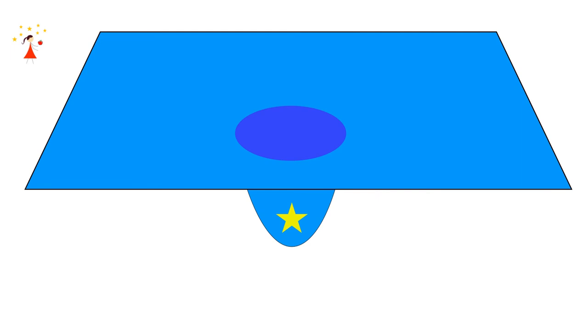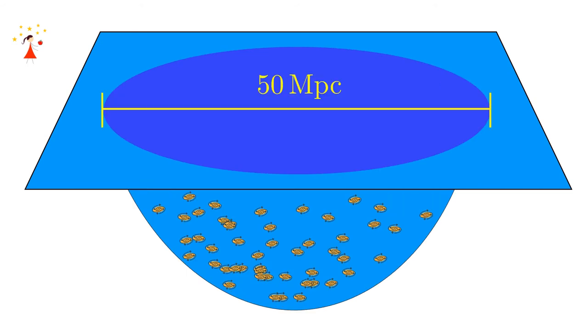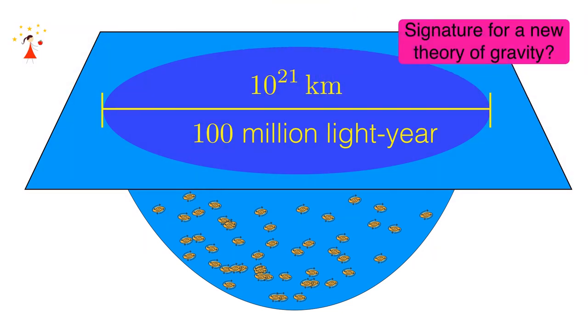Right. So that's why you need to test general relativity at large scales, then, to understand if it is correct. Yes, exactly. And one key test that we want to perform is to measure the distortion of time at cosmological distances. So this means that we want to look at distortion created not by a single object like a star or a galaxy, not even by a cluster of galaxies, but really a distortion of very large extension, of the order of 50 megaparsecs, which corresponds to 10 to the 21 kilometers, if you can imagine what it is. So a distortion with an extension that would take photons a hundred million years to travel across. Because it is really at those scales that general relativity may fail, and that we may see the signature for a new theory of gravity.